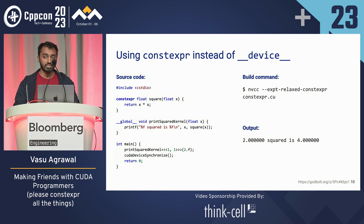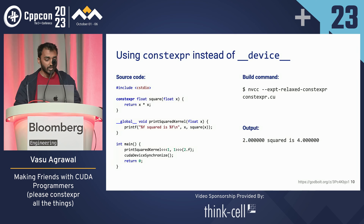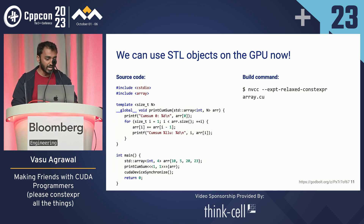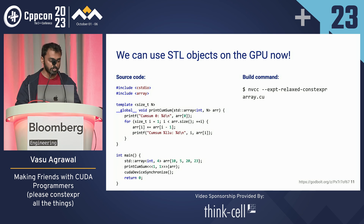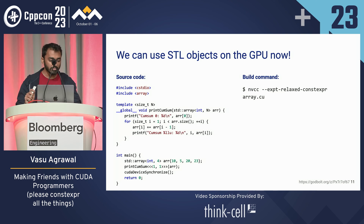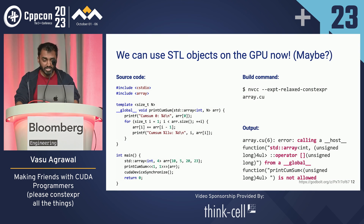What this also means is that because so much of the standard library has been annotated with constexpr, we can now use STL objects on the GPU. In this example, we're passing in a std::array, making it on the CPU, passing it by copy into the GPU, and printing a cumulative sum — we should see the cumulative sum of 10, 5, 20, and 23, which happens to be today's date. We build with the experimental relaxed-constexpr flag, but unfortunately we get an error.